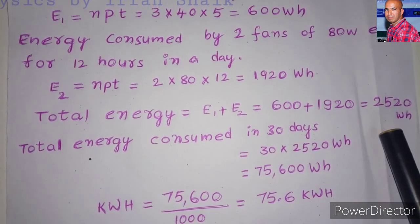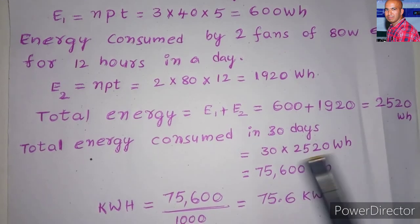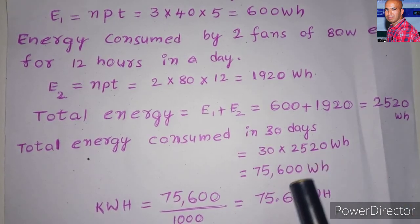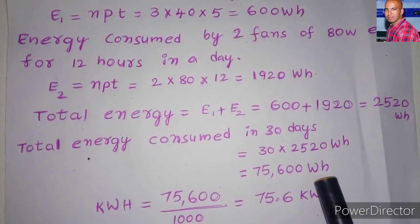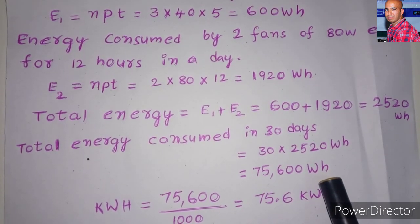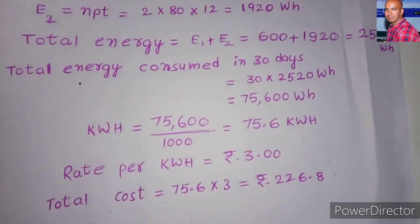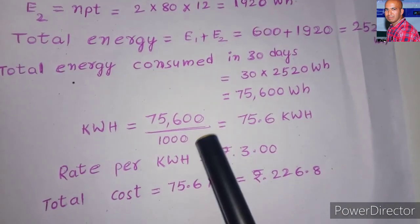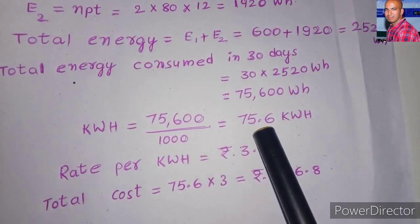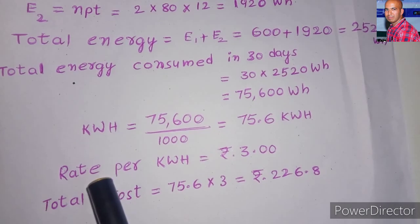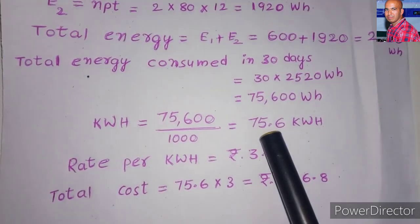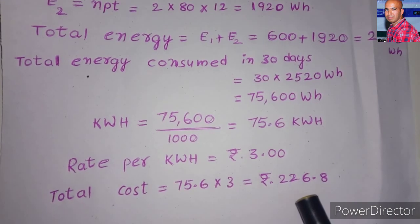This is for 1 day, so we need to find the total for 30 days. Total energy consumed in 30 days is 2520 multiplied by 30, giving 75600 watt hours. Converting to kilowatt hours, since 1 kilowatt hour equals 1000 watt hours, we get 75.6 kilowatt hours. The rate is 3 rupees per kilowatt hour, so the total cost is 75.6 multiplied by 3, which gives 226.8 rupees.